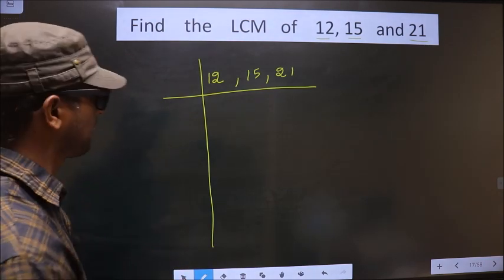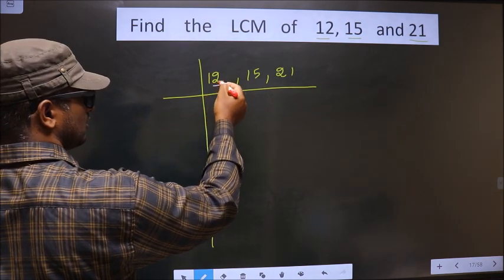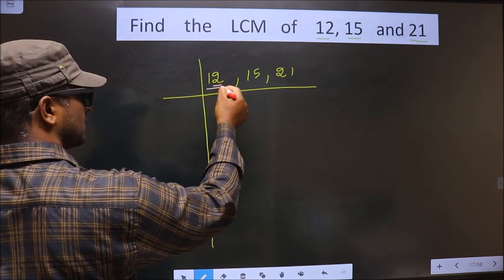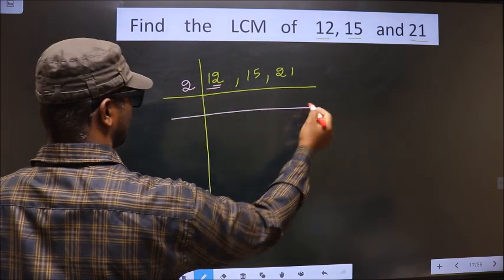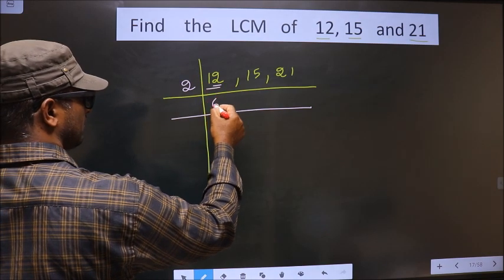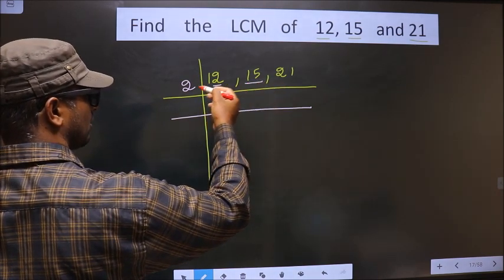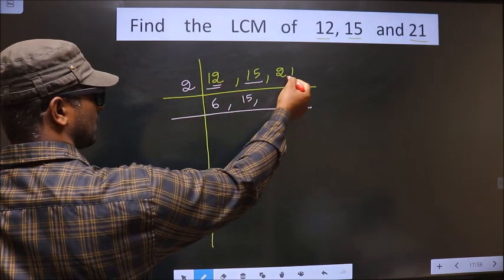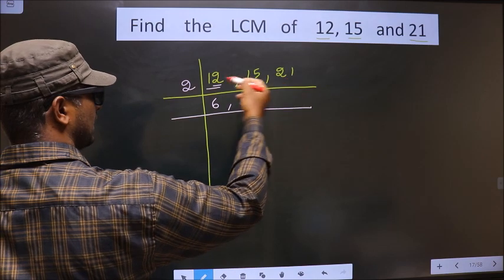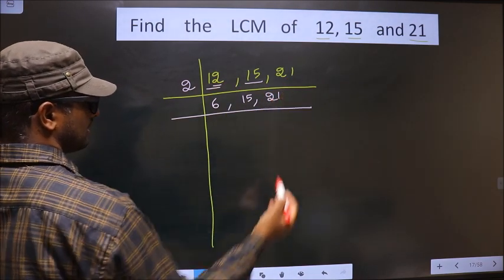Next, in this number, last digit is 2 which is even. So this is divisible by 2. We take 2 here. When do we get 12 in 2 table? 2, 6, 12. Now here we have 15. 15 is not divisible by 2, so you write as it is down. Next number is 21. 21 is not divisible by 2, so you write 21 as it is down.